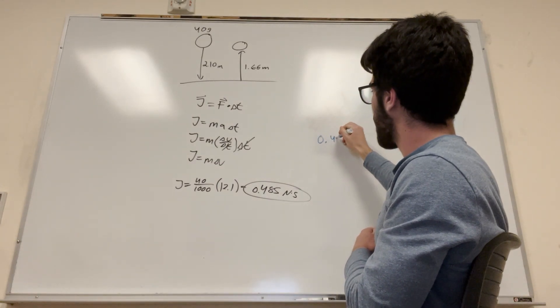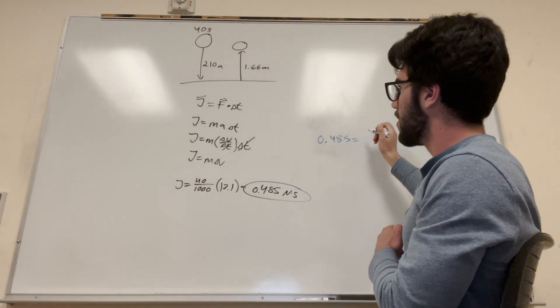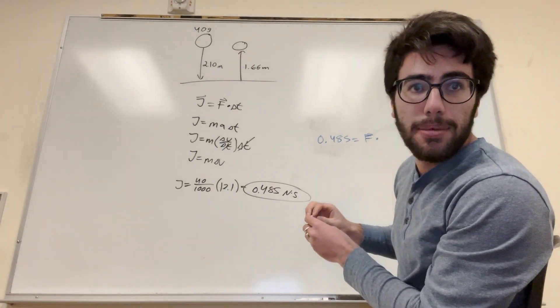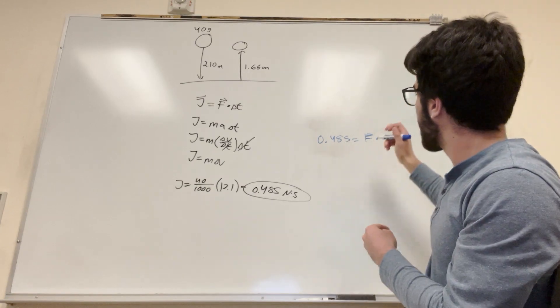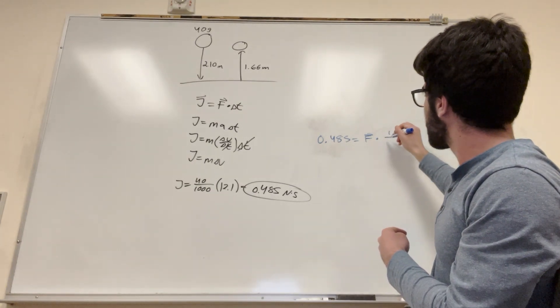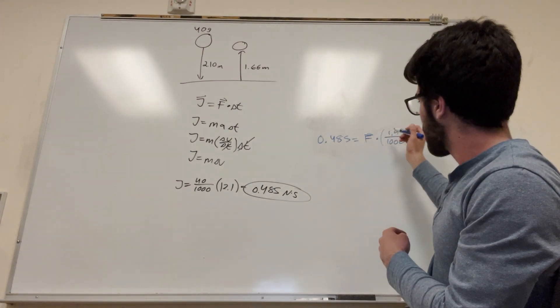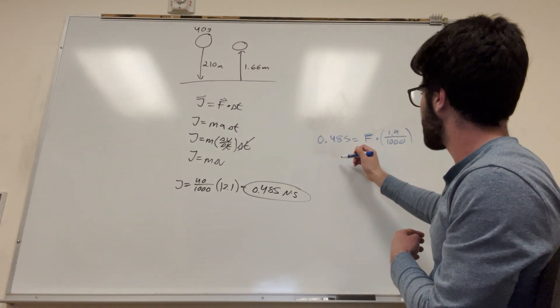So it's going to be 0.485 is equal to force is what we're trying to find times change in time, and that's our change in time is 1.9 milliseconds divided by 1,000 to get it in actual seconds. And then, so you're going to move this over, of course, just divide it by it.